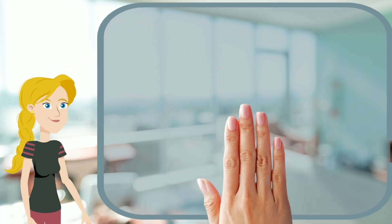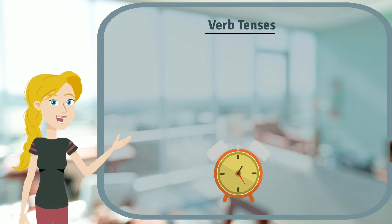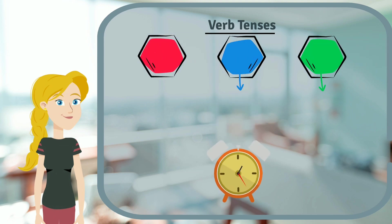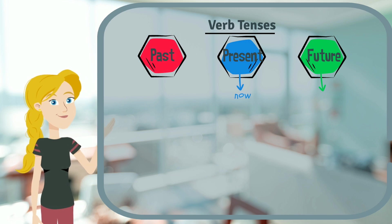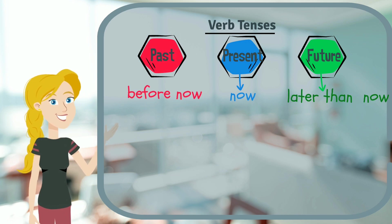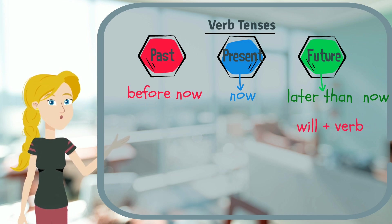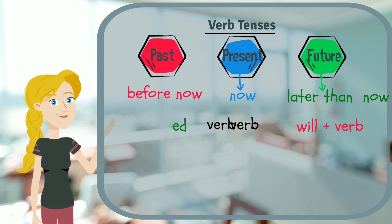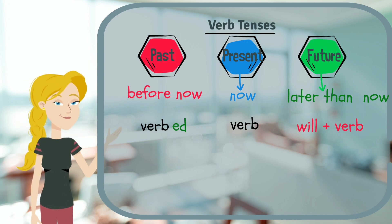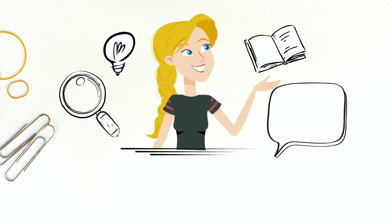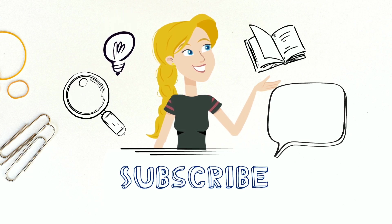Now let's wrap up. The verb tenses tell us when an action takes place. Verbs come in three tenses: past, present, and future — before now, now, and later than now. "Will" precedes the verb in future tenses, and -ED is added to regular verbs in past tenses. That's it for now. Thank you very much for watching, and don't forget to subscribe and share this video with your friends.